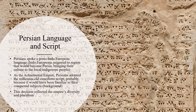The Persians, the ruling class of the Achaemenid Empire, spoke a Proto-Indo-European language. Yet when they built the Achaemenid Empire, they adopted the millennia-old cuneiform script, probably because it would have been familiar to their conquered subjects, especially the Babylonians. The decision to adopt cuneiform reflected the Achaemenid Empire's diversity and pluralism, as they used elements and cultural mores from the peoples that they conquered.